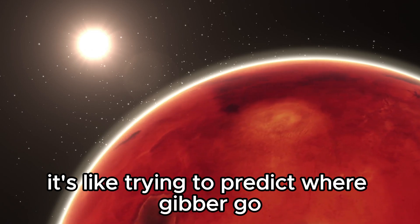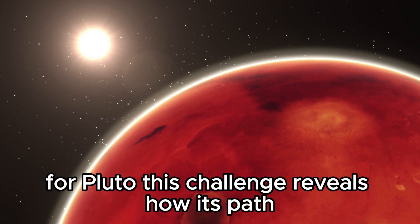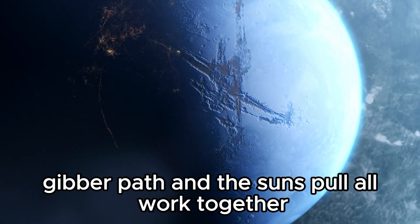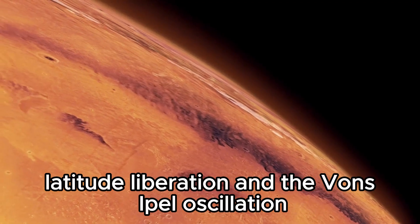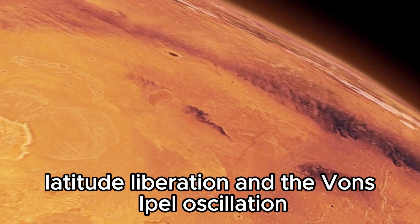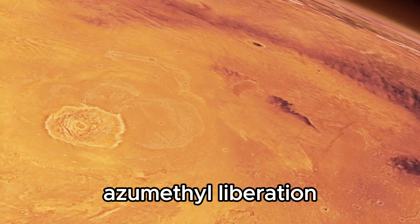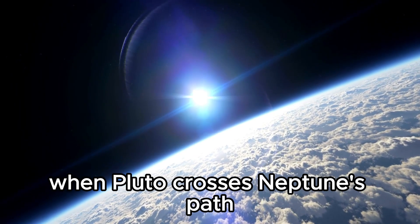Understanding how three celestial bodies move and interact gravitationally like Pluto, Neptune, and the sun is a big challenge. It's like trying to predict where they'll go based on where they start and how they pull on each other. For Pluto, this challenge reveals how its path, Neptune's path, and the sun's pull all work together. Terms like azimuthal libration, latitude libration, and the Kozai oscillation help scientists solve this cosmic puzzle. Azimuthal libration is crucial for keeping planets in their orbits when Pluto crosses Neptune's path.